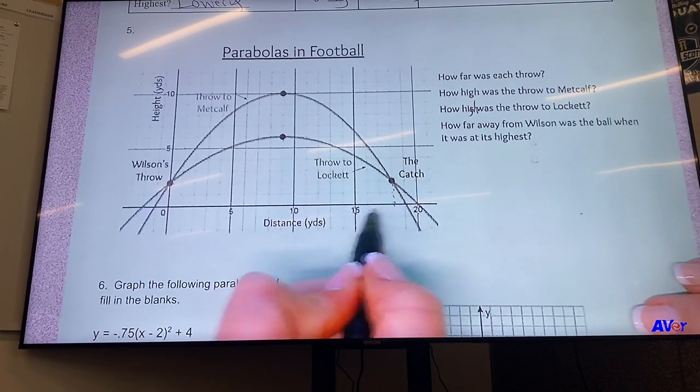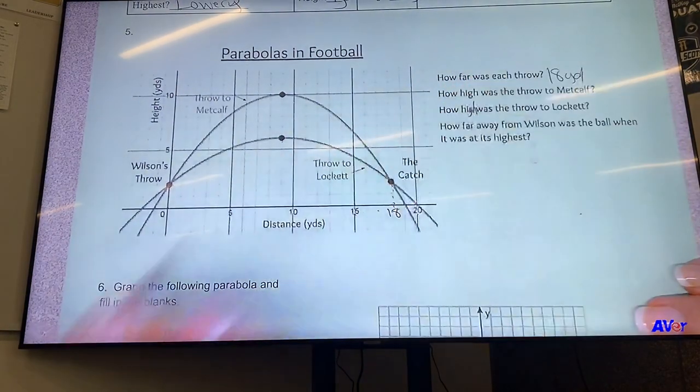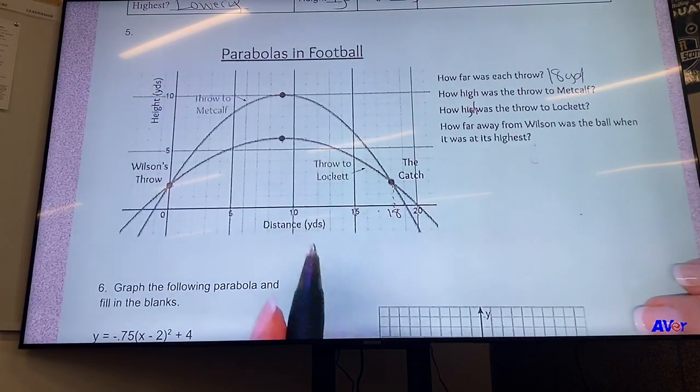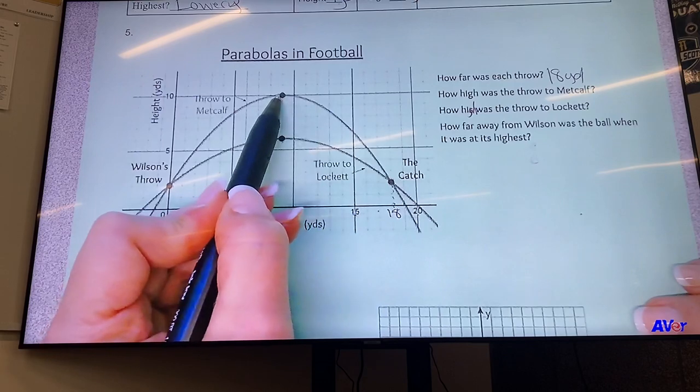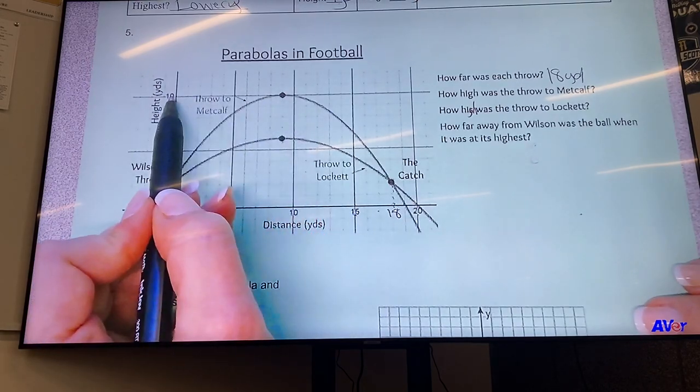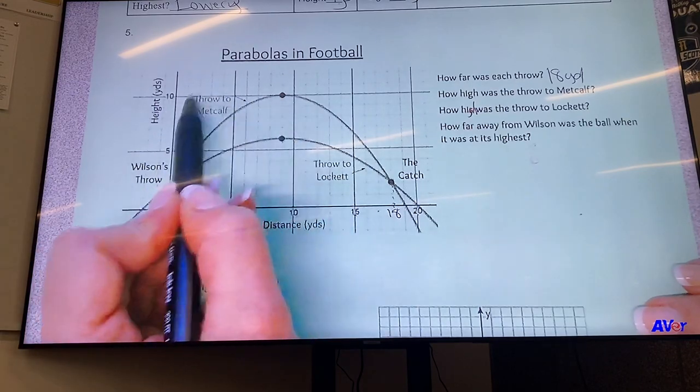Which is down to - this is 15 and this is 20 - 16, 17, 18, so 18 yards. And how high was the throw to Metcalf? So you go up to the highest point, the vertex, over to the side, and it was 10 yards.